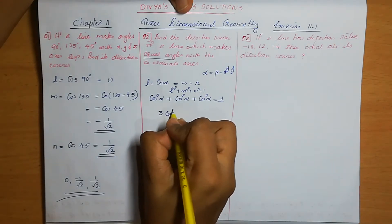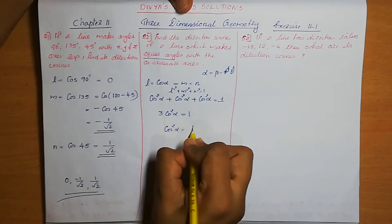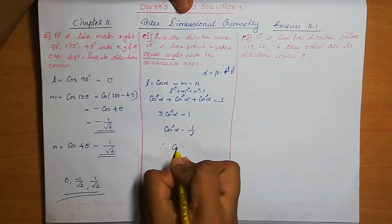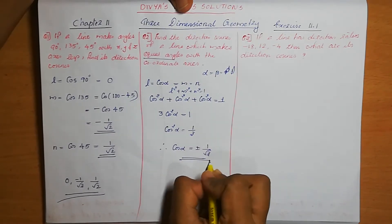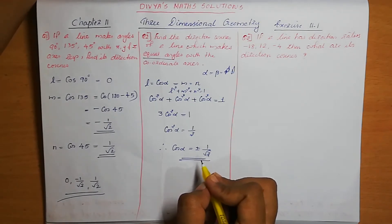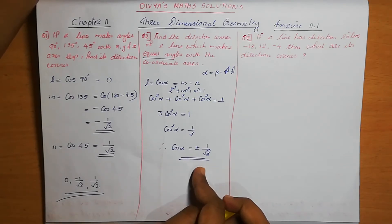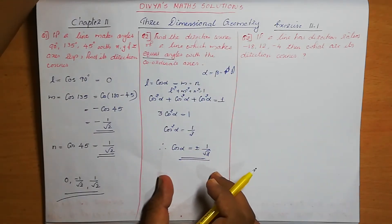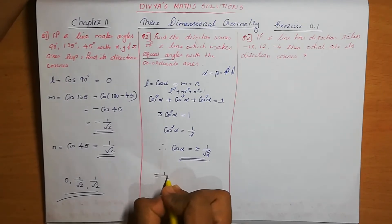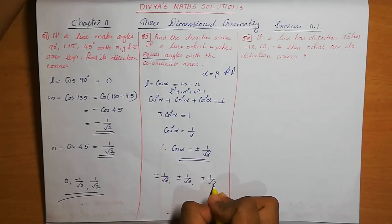Therefore, cos alpha is equal to plus or minus 1 by root 3. So the direction cosines of the line which is equally inclined to the coordinate axes are plus or minus 1 by root 3, plus or minus 1 by root 3, plus or minus 1 by root 3.